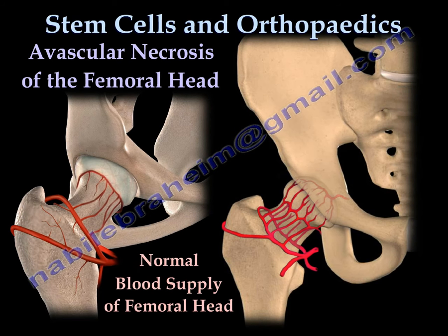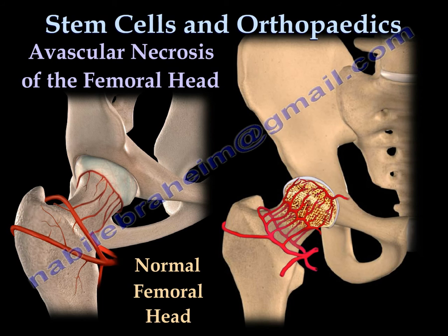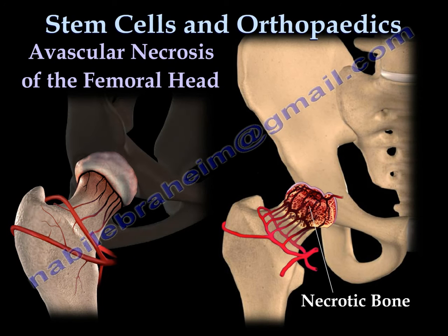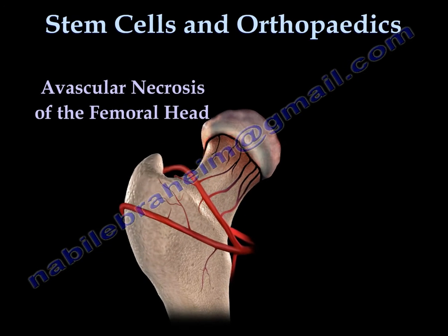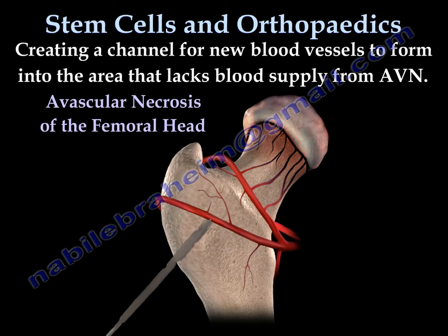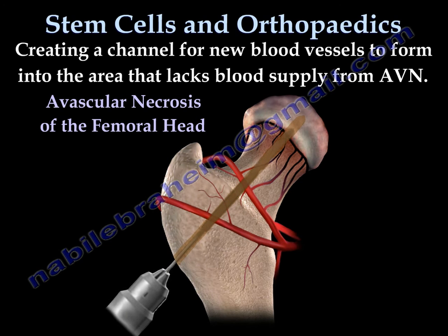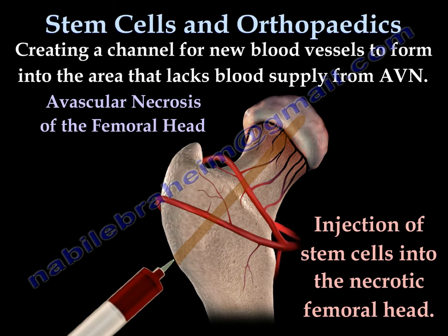This is a picture of normal blood supply of the femoral head. When avascular necrosis happens because the blood supply is diminished to the femoral head, there is death of a segment of bone — necrotic bone — in the femoral head. You can inject the stem cells to revive this area after drilling the necrotic femoral head and injecting the stem cells.